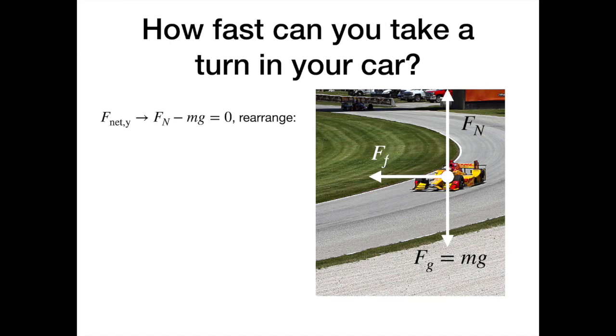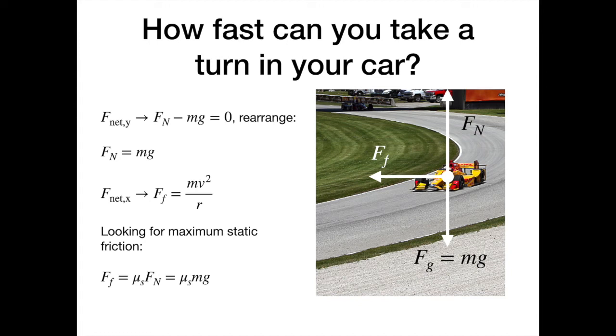So using the equation for the vertical direction, we can rearrange and solve that the normal force in this case is equal to the force of gravity on the car, mg. And that's important because we're dealing with friction here. So we know that from the centripetal force that the force of friction is equal to mv squared over r. But we're looking for the fastest that you can take the turn. So we're looking for the maximum value of the static friction. So that would be equal to mu sub s times the normal force. And we know the normal force is equal to mg, so that becomes mu sub s times mg.